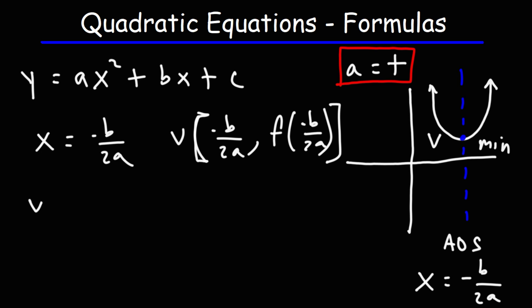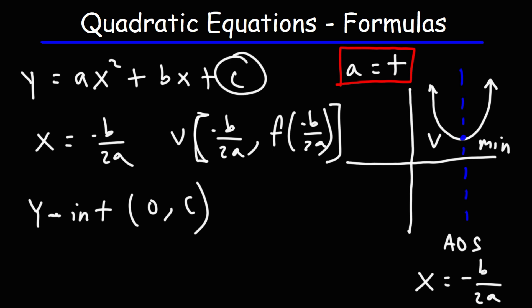The axis of symmetry is simply the x-coordinate of the vertex, so it's x = −b/2a. The y-intercept is going to be (0, c) — whatever the c value is in this equation, that gives you the y-intercept.